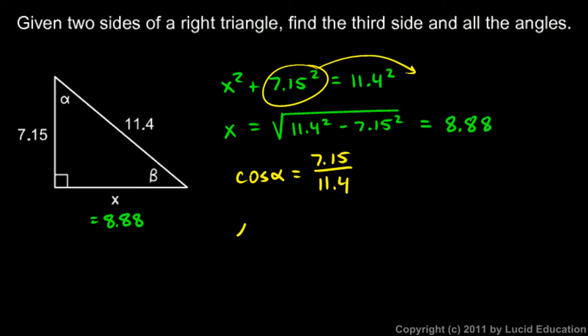So alpha, therefore, will be the inverse cosine of that. The inverse cosine of 7.15 over 11.4. And that I do in one step on the calculator, and it gives me 51.2 degrees.